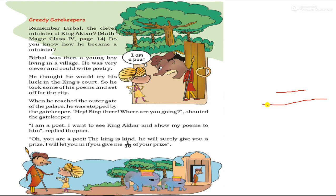You know how he became a minister? He was living in a village. He was very clever and could write poetry. He thought he would try his luck in the king's court. So he took some of his poems and set off for the city. When he reached the outer gate of the palace...